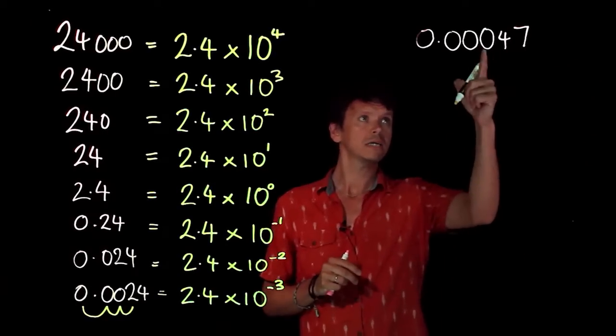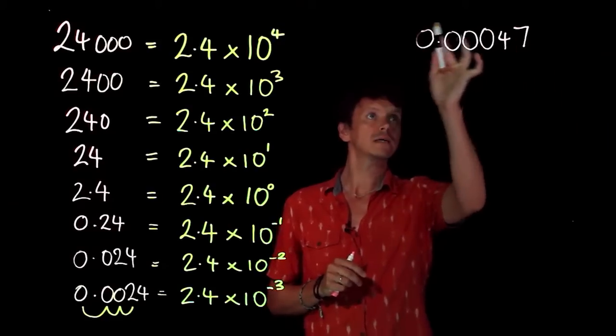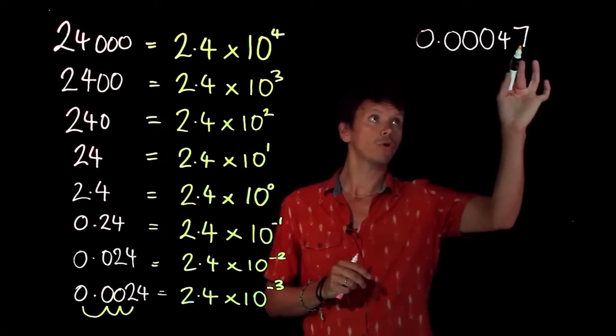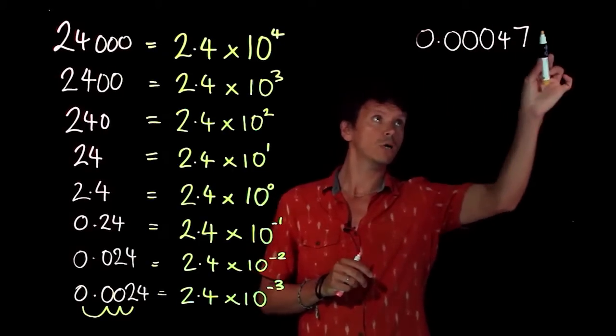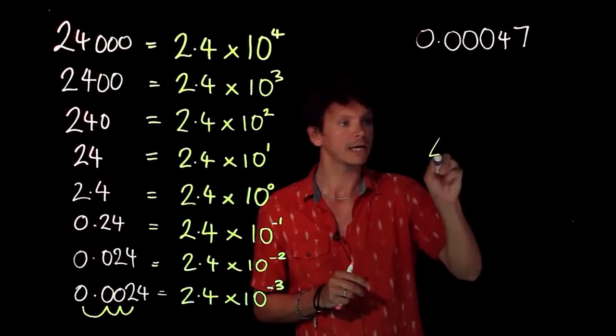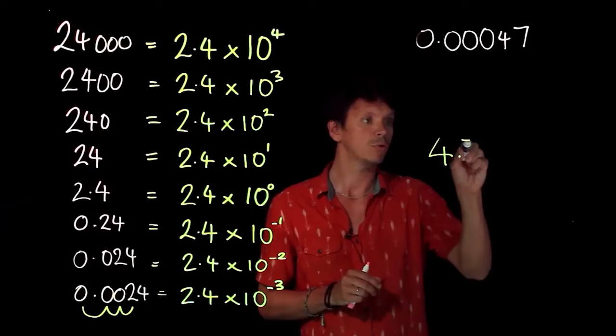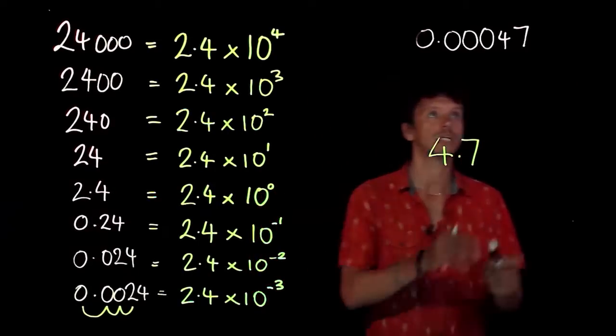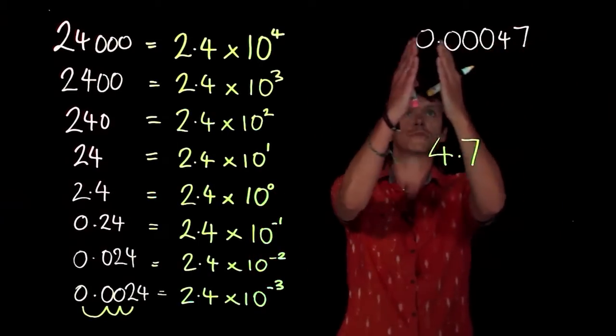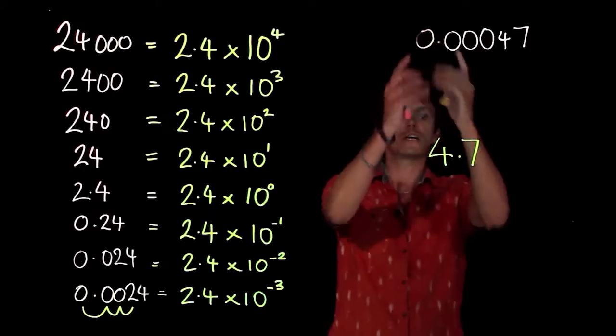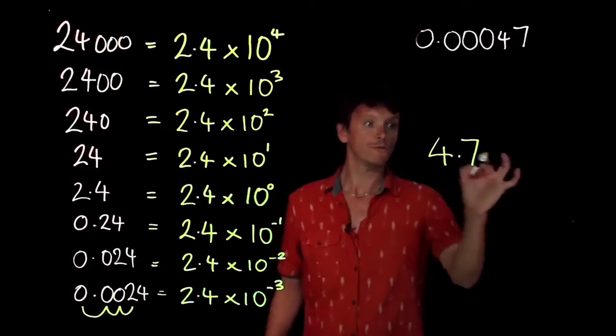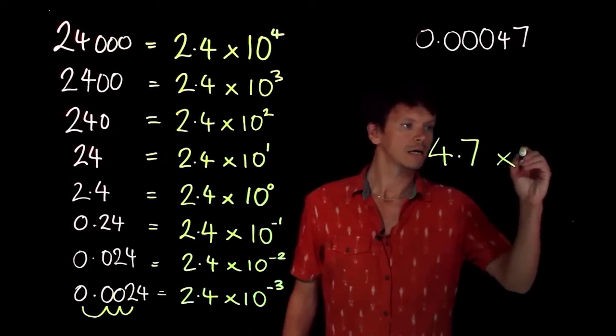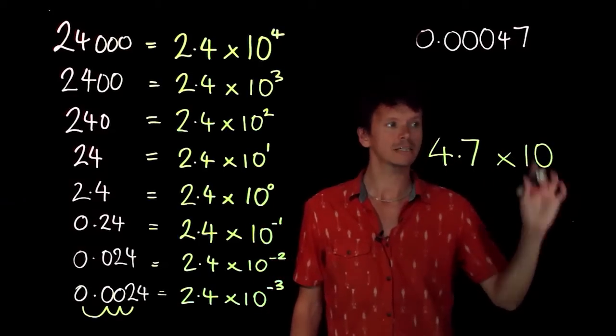We know that our first number is going to be bigger than one, it's going to be 1 or more and less than 10. When we look at the number we're working with, we're actually going to pick 4.7. We're looking at where we can shift these numbers to find our first number which is 1 or more. 4.7 times 10 to the power of what?